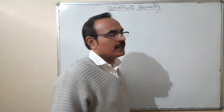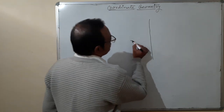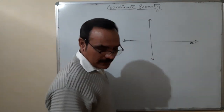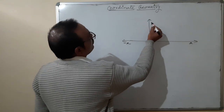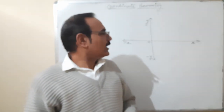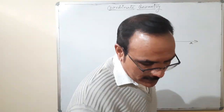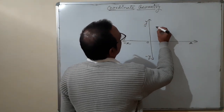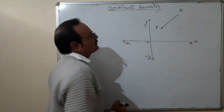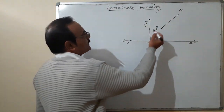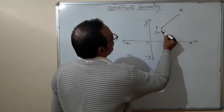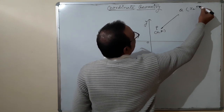In Coordinate Geometry, you know the Cartesian plane has axes: x, minus x, y, and minus y, with origin at 0. I will take any two points in the first quadrant. Let this point be P and here I am taking Q, and we are finding the distance between P and Q. The coordinates of point P, which lies on the Cartesian plane, are x1, y1, and the coordinates of point Q are x2, y2.